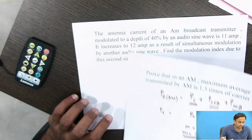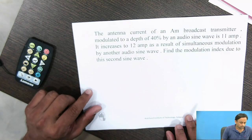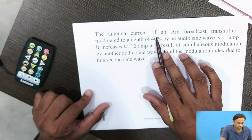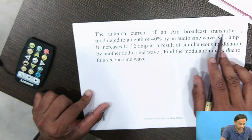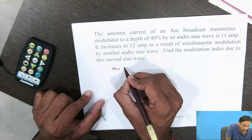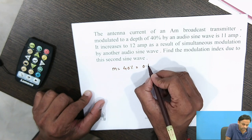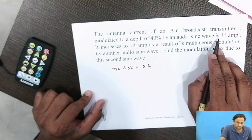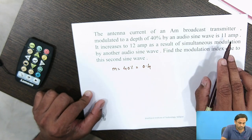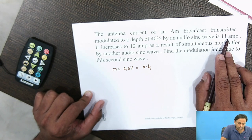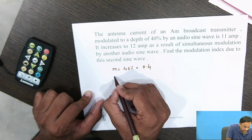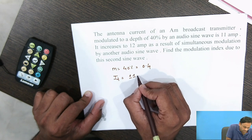Now we'll solve a problem based on antenna current. The antenna current of an AM broadcast transmitter modulated to a depth of 40% (M = 0.4) by an audio sine wave is IT = 11 amperes.